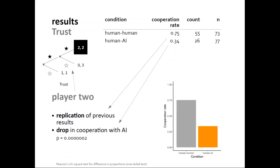But in the role of player two, behaviors were significantly different. In the role of player two, participants already know that the first player cooperated with them — that's the only time they actually make a choice. When people interacted with other people, the cooperation rate was very high — 75% — people repaid the first player's trust with cooperation and shared the payoff equally. But when they interacted with the machine, they were much more keen to not cooperate — to exploit the machine and get more money for themselves at the machine's expense — and this drop was very sharp.